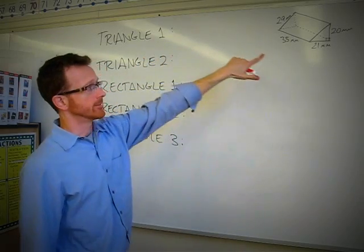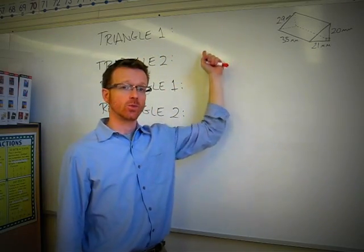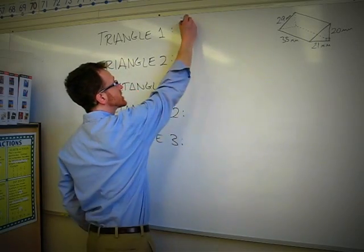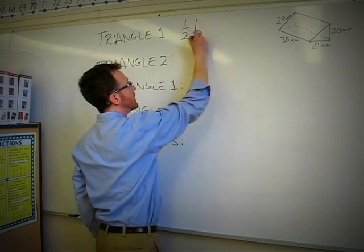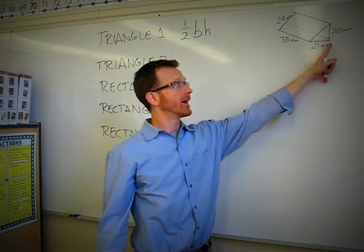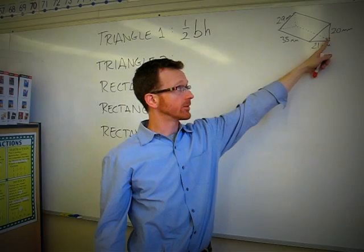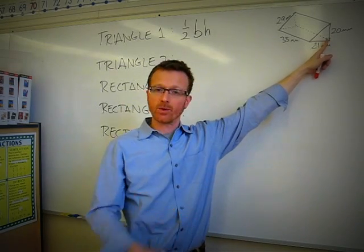Triangle one. The formula for the area of a triangle is one-half base times height. So I'm going to start by writing that. One-half base times height. Well, with the right triangle, the height always forms a right angle with the base. And with the right triangle, it's very simple because they give us both.